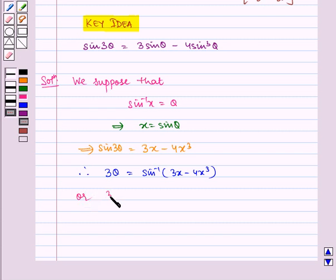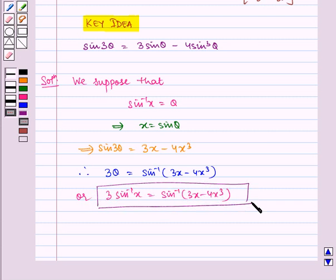So it can be written as 3 sine inverse x equals sine inverse of 3x minus 4x cube. And this is our required result.